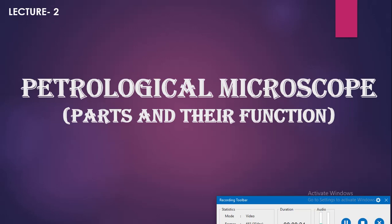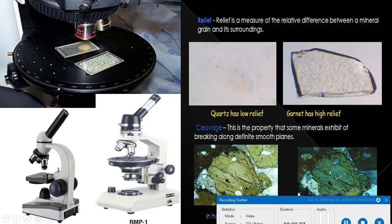Let us know about what is mineral and in which way we can study the properties of minerals. Minerals are characterized by certain definite physical properties, chemical composition, optical property, and internal molecular structure. Hence the study of mineral is made under different heads: physical mineralogy, chemical mineralogy, optical mineralogy, and X-ray mineralogy.